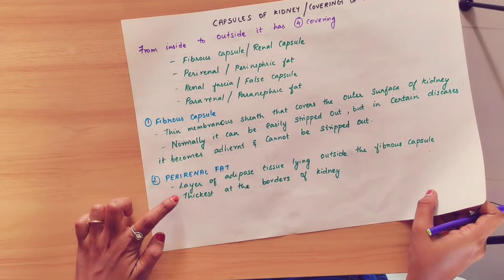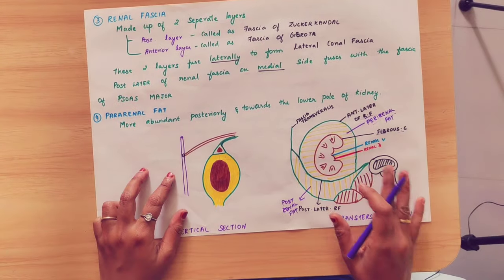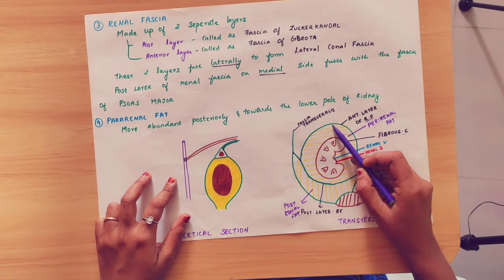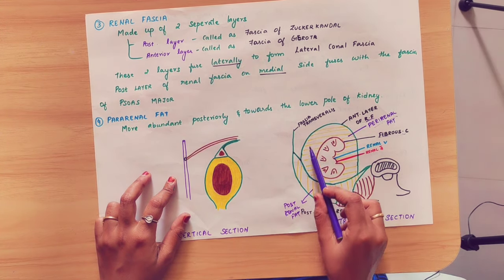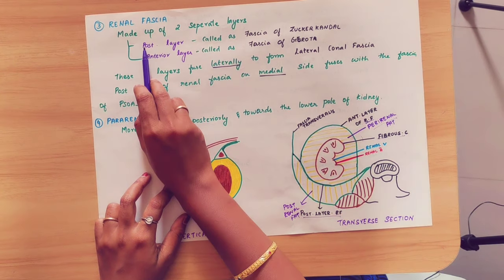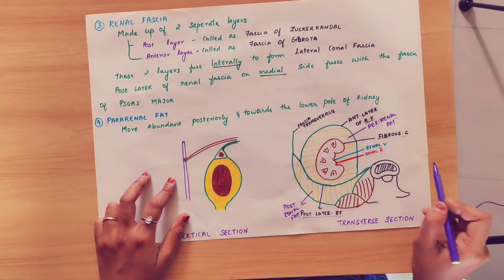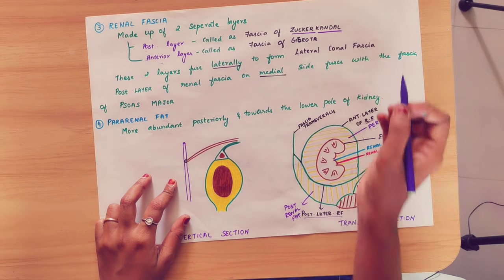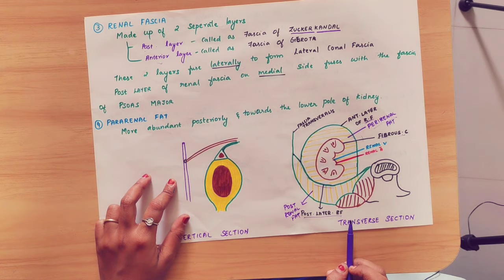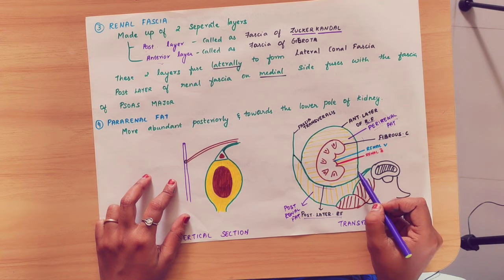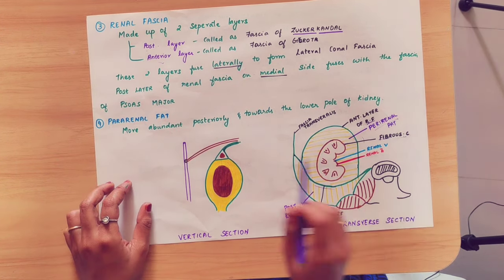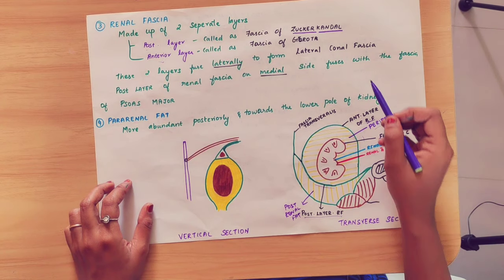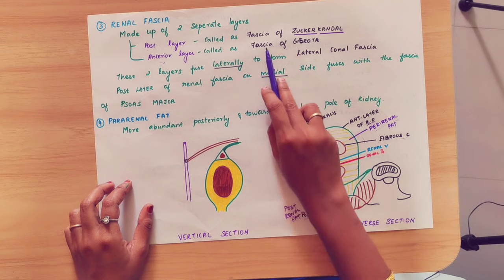The third layer is the renal fascia, which has an anterior layer and a posterior layer. The anterior layer is also known as the fascia of Gerota (G-E-R-O-T-A), and the posterior layer is also known as the fascia of Zuckerkandl (Z-U-C-K-E-R-K-A-N-D-L).